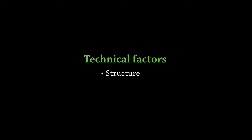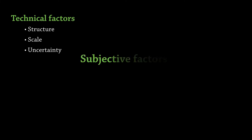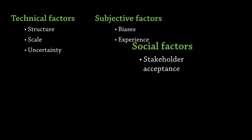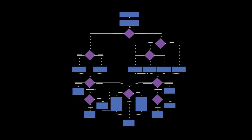This leads us to the model selection process. Model selection itself is a multi-criteria decision making problem that is influenced by a myriad of interactive factors, including technical factors such as model structure, scale and level of uncertainty allowed. It is also influenced by subjective factors such as biases and the modeller's knowledge and experience about methods, and by social factors such as stakeholders' acceptability of methods. We use a multi-criteria decision analysis process to structure the assessment and selection of the modelling approach. Being a multi-criteria problem, there is no single approach that can be deemed the best for any particular situation.